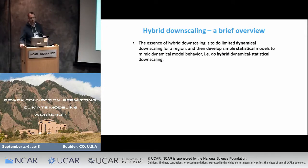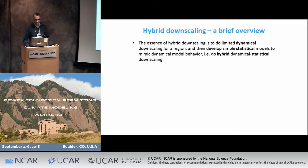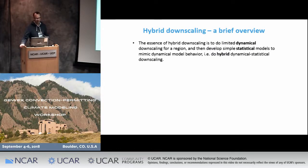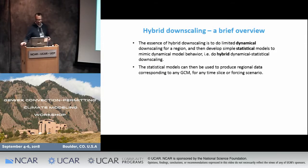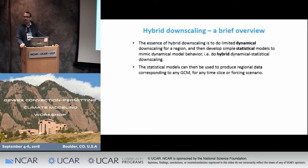The essence of hybrid downscaling is to do limited dynamical downscaling for a region and then develop simple models — emulators or statistical models — that mimic the dynamical model behavior. We call it hybrid downscaling because it's a hybrid of dynamical and statistical techniques. The statistical models can be used to produce regional data corresponding to any GCM, any time slice, in any forcing scenario, allowing for uncertainty quantification in a way that isn't possible with a single dynamical run.